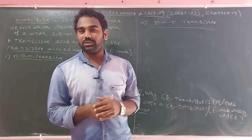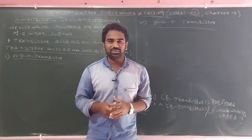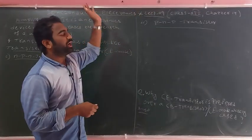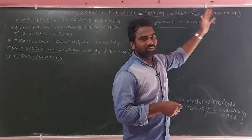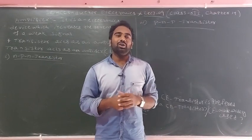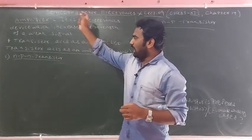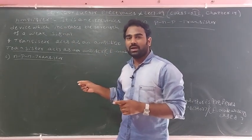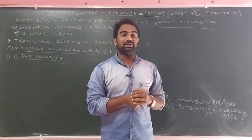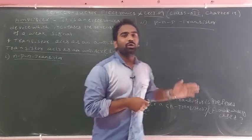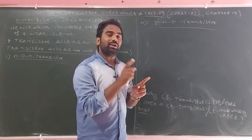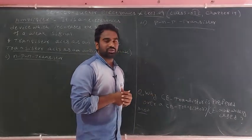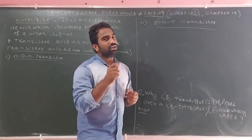Hello everyone, this is Rakesh Markhuntia, Lecturer in Physics. Welcome to a new lecture — lecture number 9 of Semiconductor and Electronics, Class 12th, Chapter 14. In this lecture, we will discuss about the amplifier: transistor acting as an amplifier, NPN transistor as an amplifier, and PNP transistor as an amplifier. And an important question: why is CE configuration widely used, or why is CE transistor preferred over CB transistor?